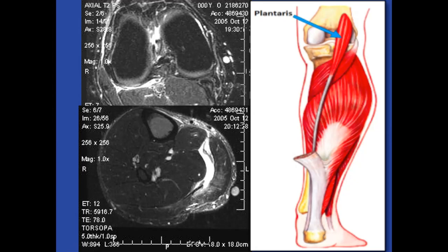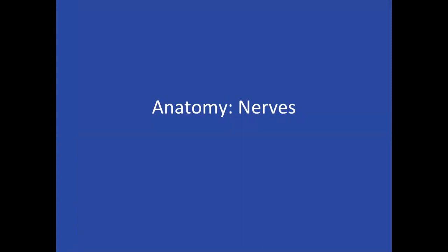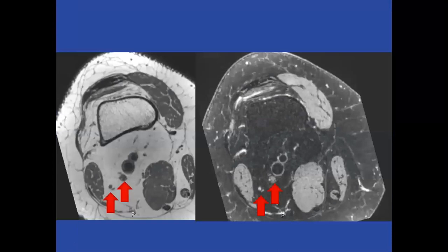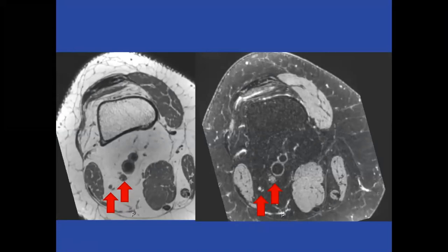Nerve assessment is also part of the knee MRI exam. The distal sciatic nerve splits into the tibial and common peroneal nerves, visible on every MRI. You look for enlargement, hyperintensity, or disruption of normal nerve architecture. Peripheral nerve imaging around every joint — at the knee it's the distal sciatic, tibial, and common peroneal nerves — should be part of the routine exam, though detailed peripheral nerve imaging is a separate topic.